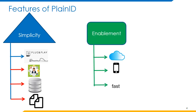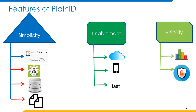Enablement: An agile, standards-based authorization layer enables rapid business growth and movement to the cloud and mobile-based solutions. Visibility: A unique graph-based technology is used to represent the connection between the entities. Here, entities may be people, devices, things, services, etc., and their respective authorizations as well.